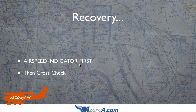Get out there — this is something that needs to be practiced. It's a scenario you can also practice in your head through chair flying. Get out there with a safety pilot, climb up to plenty of altitude — 3,000 feet minimum. Preferably get out there with an instructor and do this sort of stuff. On the recovery, try the airspeed indicator first, adjust the throttle accordingly, then adjust the nose, then cross-check from there. That is your recovery — that's the important part.